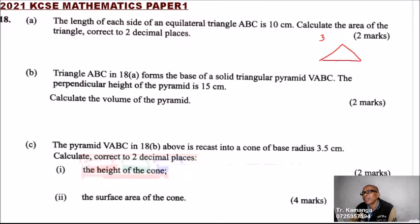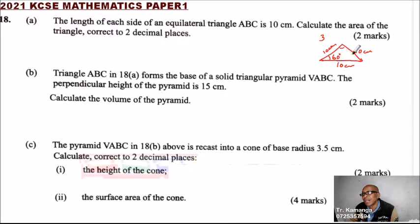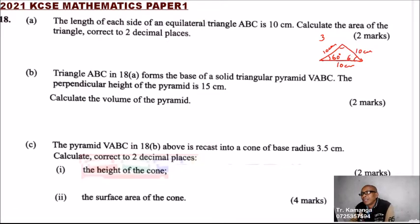An equilateral triangle is a triangle whose three sides are equal. So this side is 10 cm, this is 10 cm, and this is 10 cm. Another thing we know about an equilateral triangle is that each angle is 60 degrees. This is 60, this is 60, and this is 60 degrees.